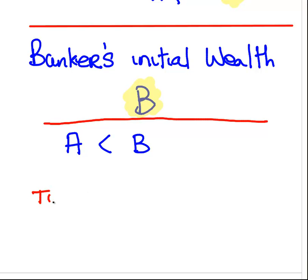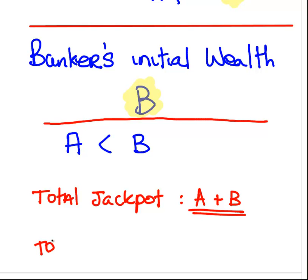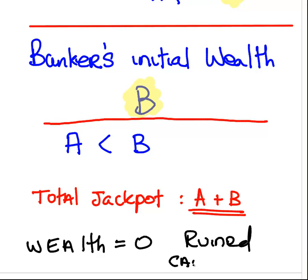Just as a remark, the total jackpot is A plus B. That's going to be important later. When either the gambler or the banker wins A plus B, their accumulated winnings are at A plus B, and the other person has zero. When somebody wins the total amount A plus B, that means the other person has zero wealth and they are ruined. When your wealth equals zero, you're ruined. Can't gamble anymore. Can't place bets. You've nothing to bet with.